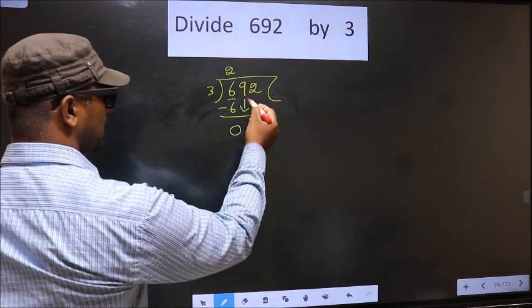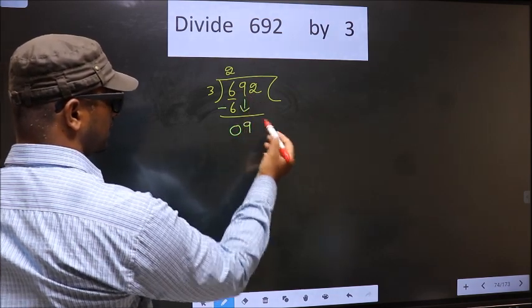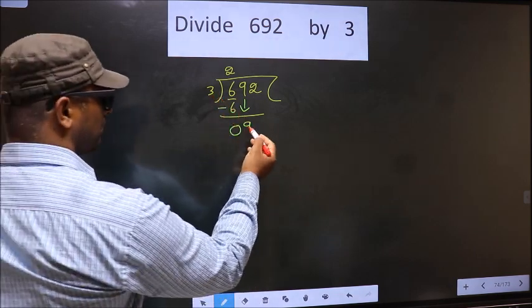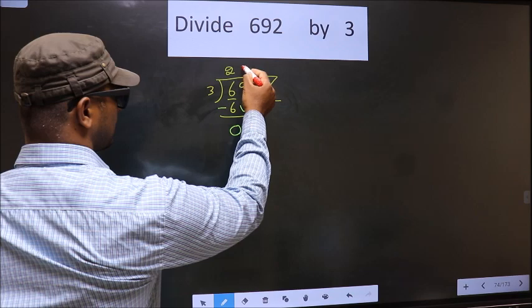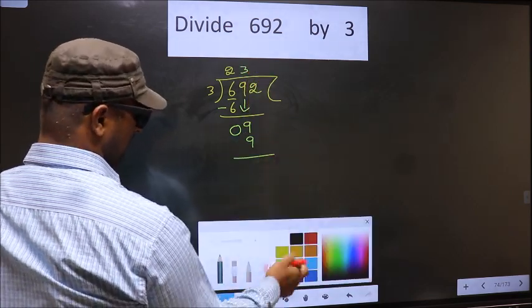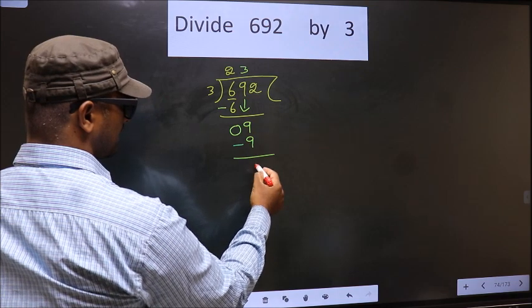Now, you bring down the beside number that is 9 down. Now, here we have 9, here 3. When do we get 9 in 3 table? 3 3 is 9. Now, you subtract. 9 minus 9, 0.